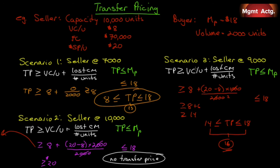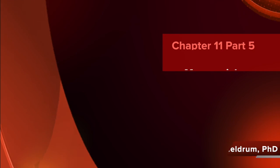To sum up: chances are, even if there is capacity, the market price will probably be the most likely transfer price chosen, because Division A does have an external market and a price in that external market. There we go — a lot more information than you wanted, perhaps, but it's better to have more than less.